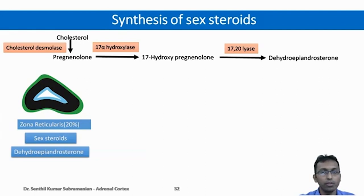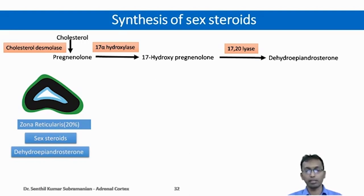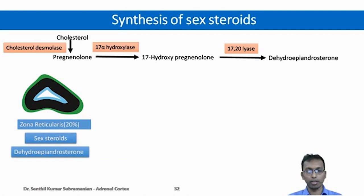Moving to the synthesis of sex steroids. They are produced from the innermost layer of the adrenal cortex, the zona reticularis. The important sex steroid secreted is dehydroepiandrosterone (DHEA). The cholesterol is converted to pregnenolone, which is acted upon by 17-alpha-hydroxylase to form 17-hydroxypregnenolone, which is acted upon by 17,20-lyase to form DHEA. The enzyme 17,20-lyase is present only at the level of zona reticularis, hence only this layer can form DHEA.